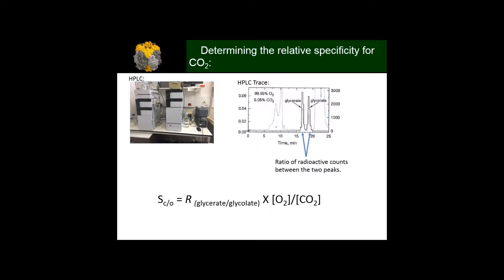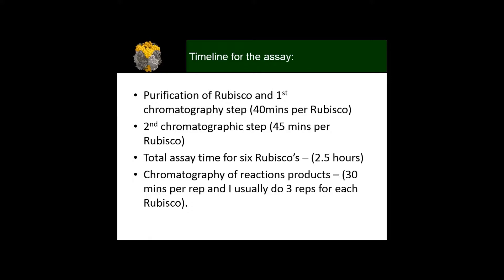How do we determine specificity using this reaction? From the HPLC trace shown in the top right corner, we get radioactive peaks in glycerate and glycolate. By looking at the amount of counts in these peaks, we form the ratio between them, which is noted in the formula as R. Then you times this by the molar fraction of the oxygen and CO2 that you've given into the system, and that gives you your relative specificity number.